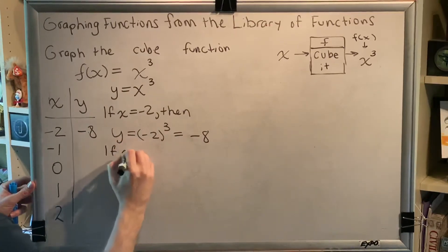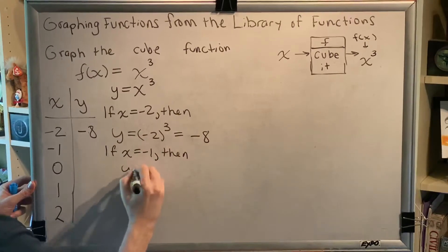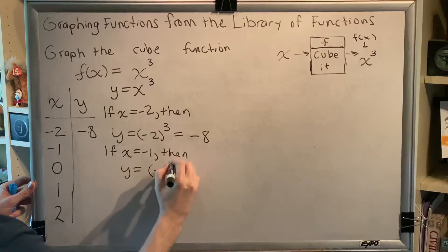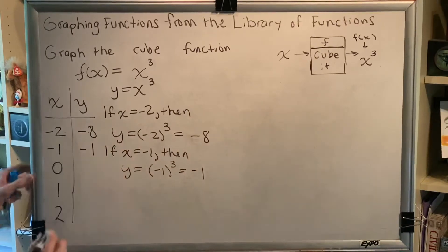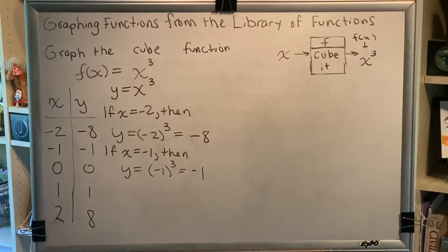If x equals negative 1, then y equals negative 1 cubed, which is negative 1. 0 cubed is 0, 1 cubed is 1, 2 cubed is 8.